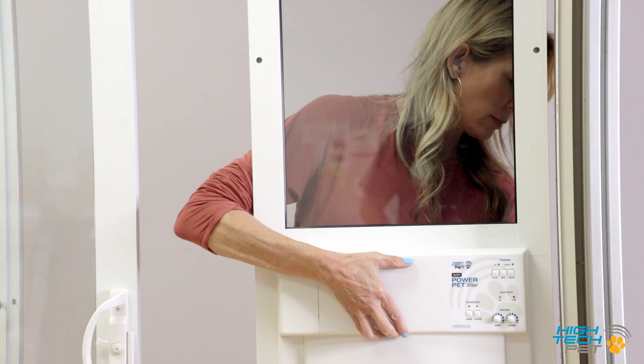Using the lock hasp slots as a guide drill two 3/32 inch holes into the door. Use the number six screws and secure the lock hasp to the existing sliding glass door.